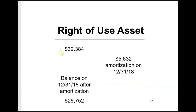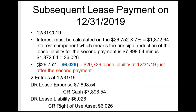The right-of-use asset T-account also started at $32,384, was credited for the same $5,632 amortization — the principal amount of the payment — leaving an ending balance of $26,752. When there's no immediate first payment, the right-of-use asset and the lease liability stay together: same opening balance on day one, same ending balance at year end. Both sit at $26,752 at December 31, 2018.